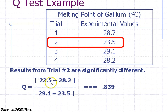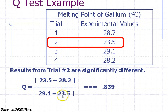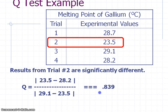Our outlier is 23.5, and from that we subtract the closest value, which was 28.2. Notice that we're interested in the absolute value of these differences, so always make your results positive. Then I divide that by my range — which always includes your outlier. In this case, 23.5 is our low value and our high value is 29.1. When we do the math, we get a Q value of 0.839. That alone doesn't tell us anything; we have to look it up on the critical Q value chart.